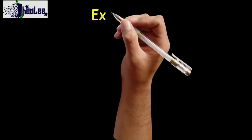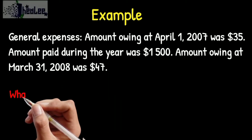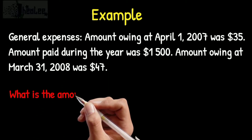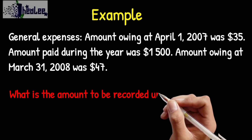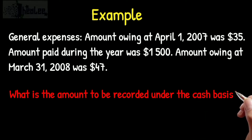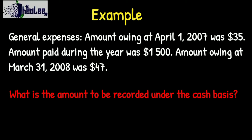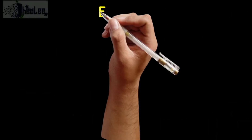Let's look at an example. General expenses: amount owing at April 1st, 2007 was $35; amount paid during the year was $1,500; amount owing at March 31st, 2008 was $47. What is the amount to be recorded under the cash basis? Remember, this is the amount paid, so the amount recorded under the cash basis is $1,500.